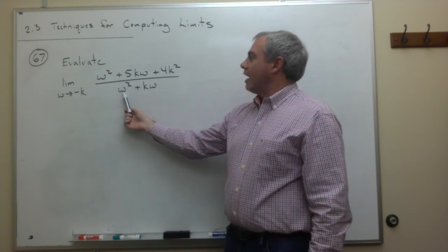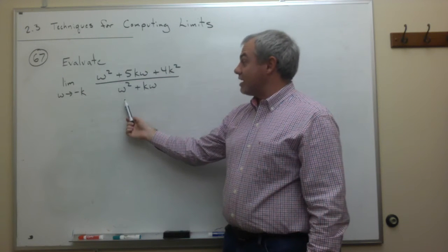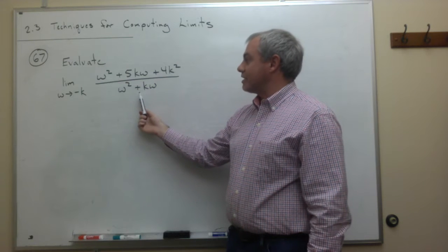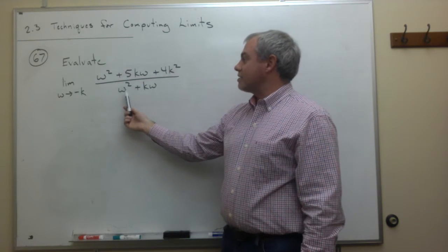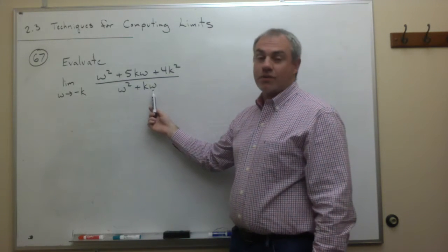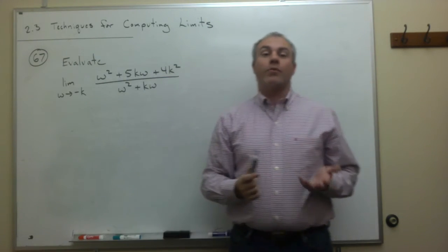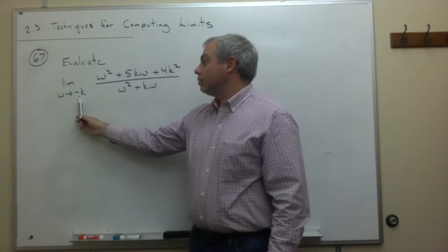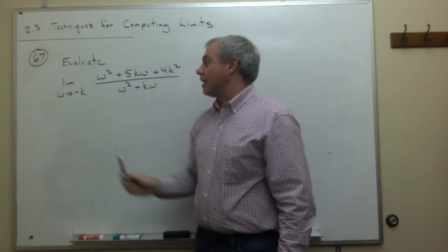So if I plugged in negative k, I'd get negative k squared, which is k squared, and then I'd get k times minus k, which is minus k squared. So I'd get a k squared minus a k squared, which is 0. So I would get division by 0, so this is not a situation where I can just plug this number in for w.